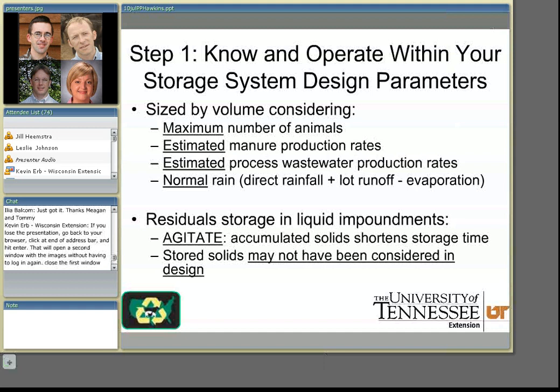The first piece of advice is that every producer should know and operate within their manure storage impoundment design parameters. All of these structures are designed by engineers considering volumes with either maximums or estimated figures — for example, the maximum number of animals at a facility, the manure production rates for those animals, the estimated process wastewater such as effluent from wash water from a dairy parlor, and normal rainfall. Normal is key because that is how they are designed — with normal rainfall considering direct rainfall into the impoundment, lot runoff, and subtracting evaporation.